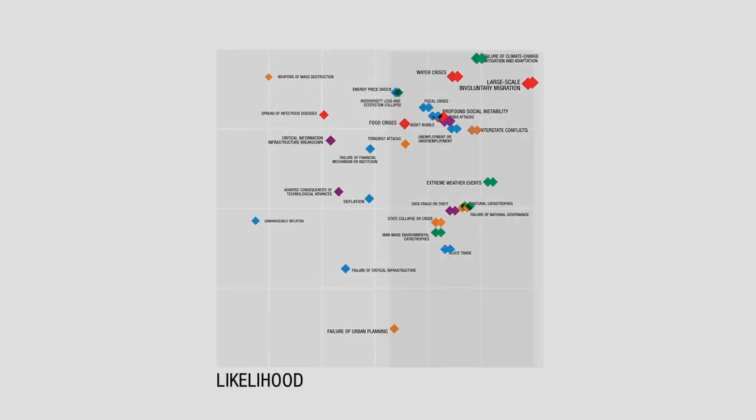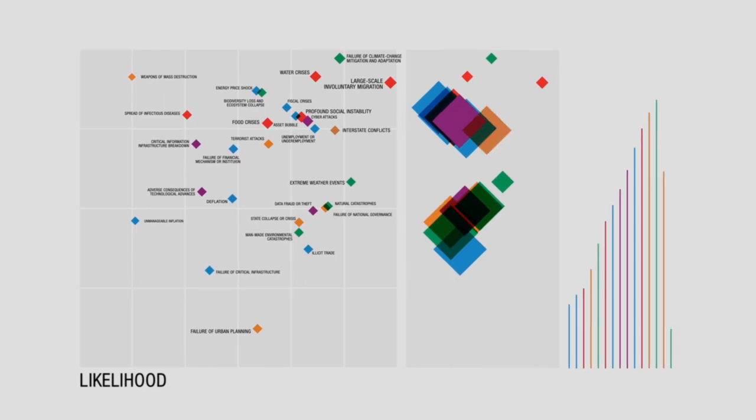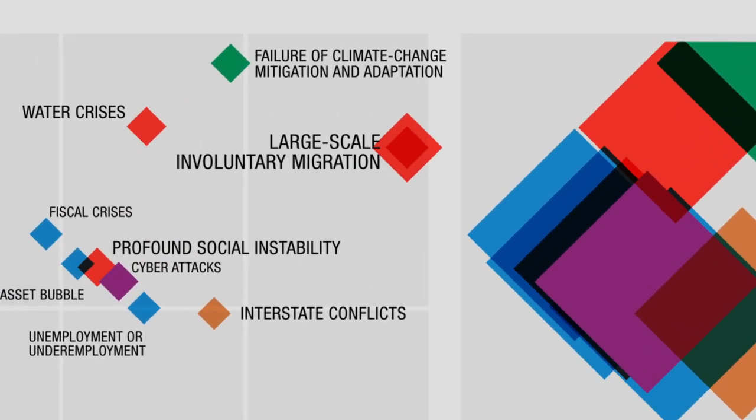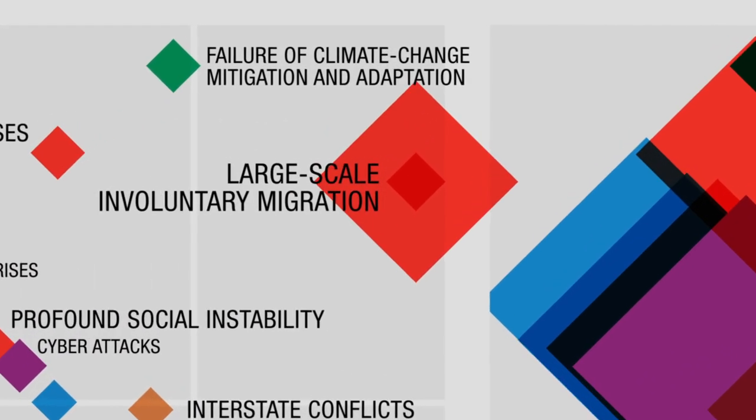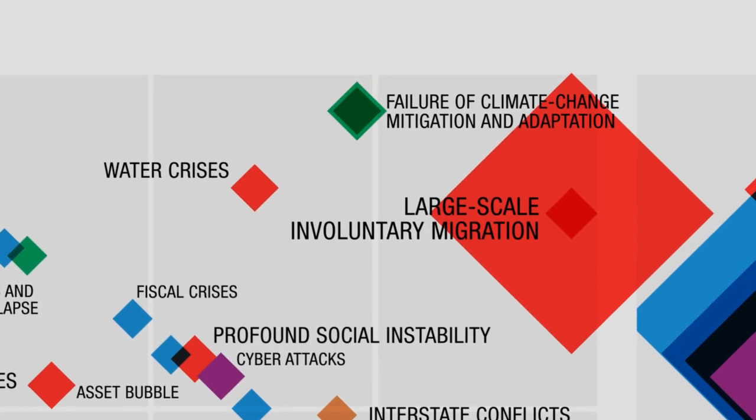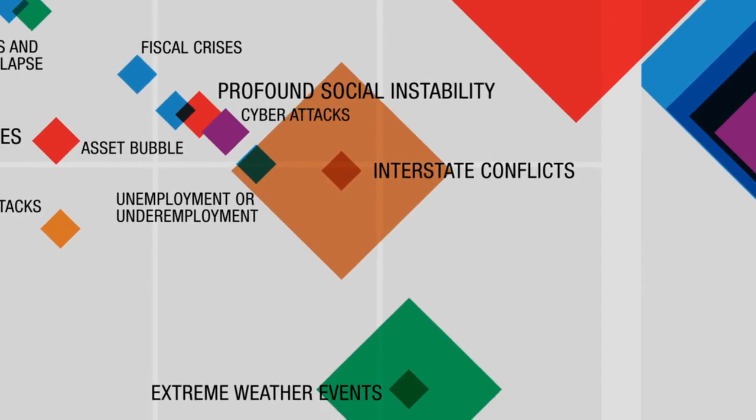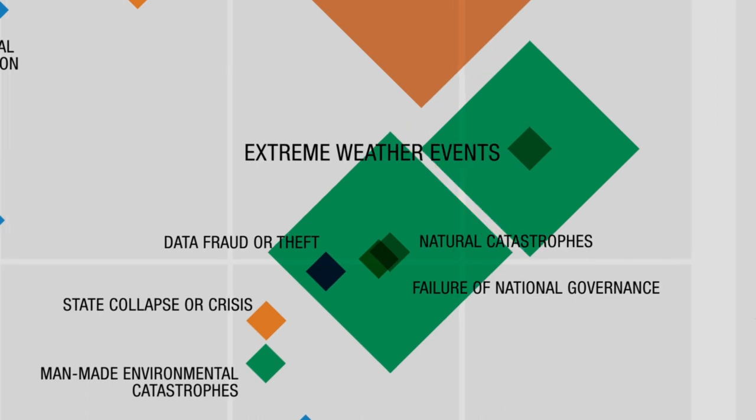The likelihood of most risks has grown this year, increasing the magnitude of global challenges for the next decade. Large-scale involuntary migration rose to number one, followed by extreme weather events, failure of climate change mitigation and adaptation, interstate conflict with regional consequences, and major natural catastrophes.